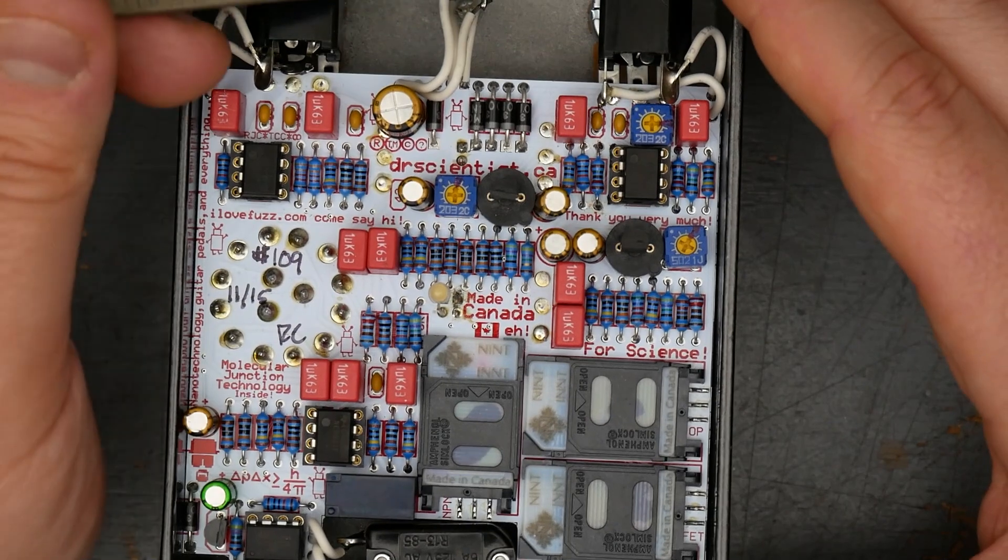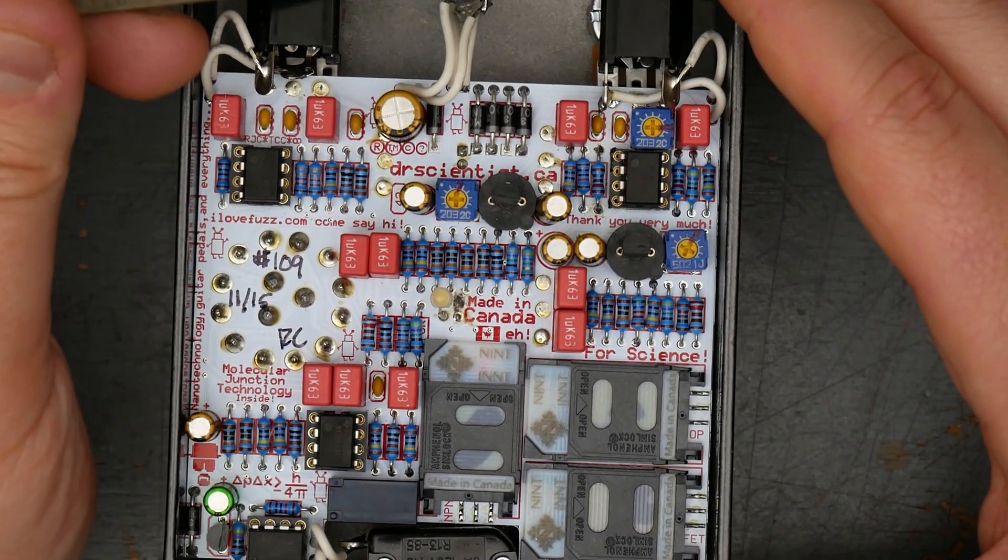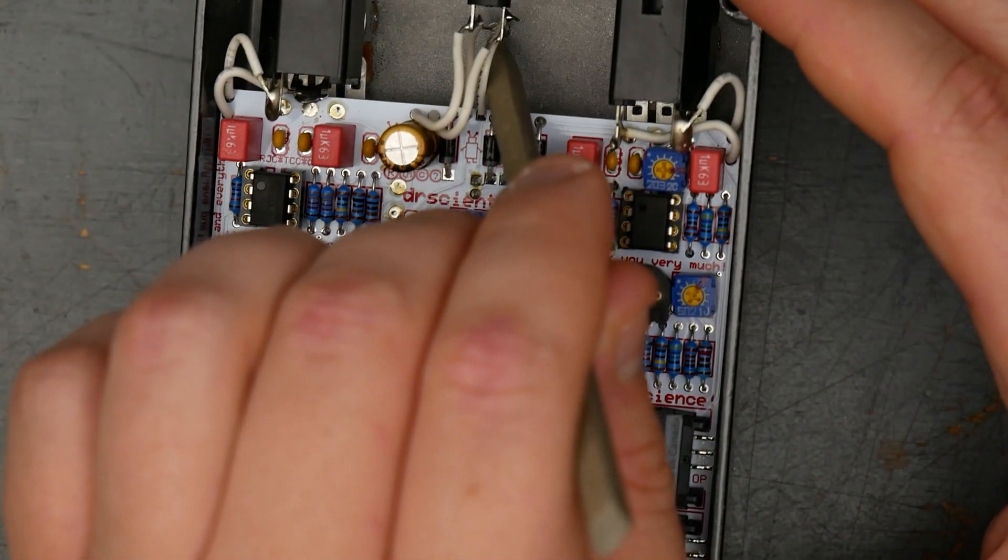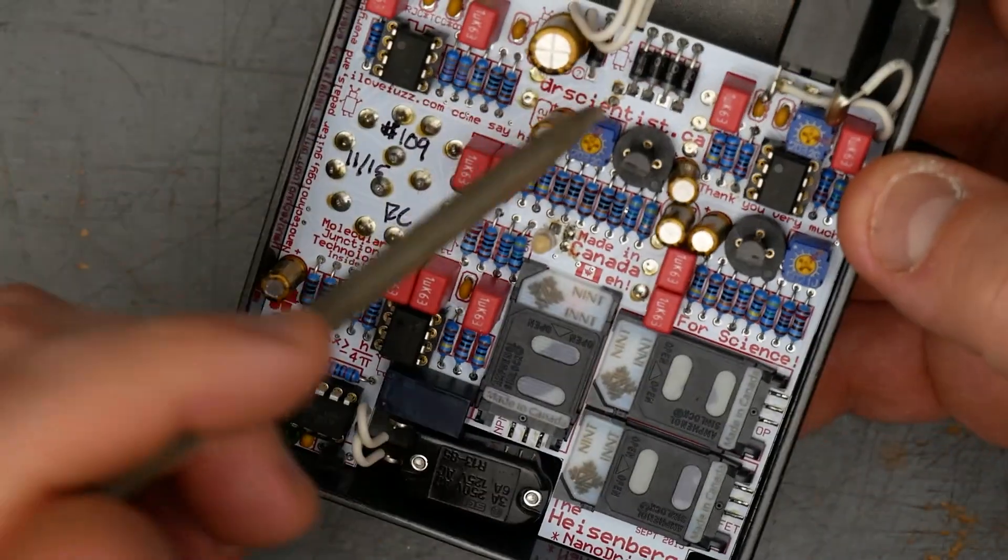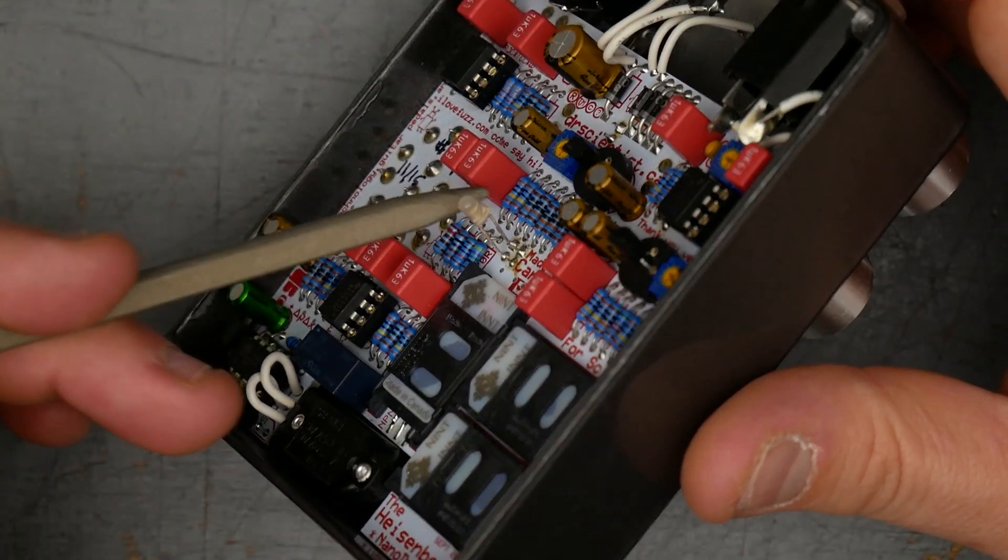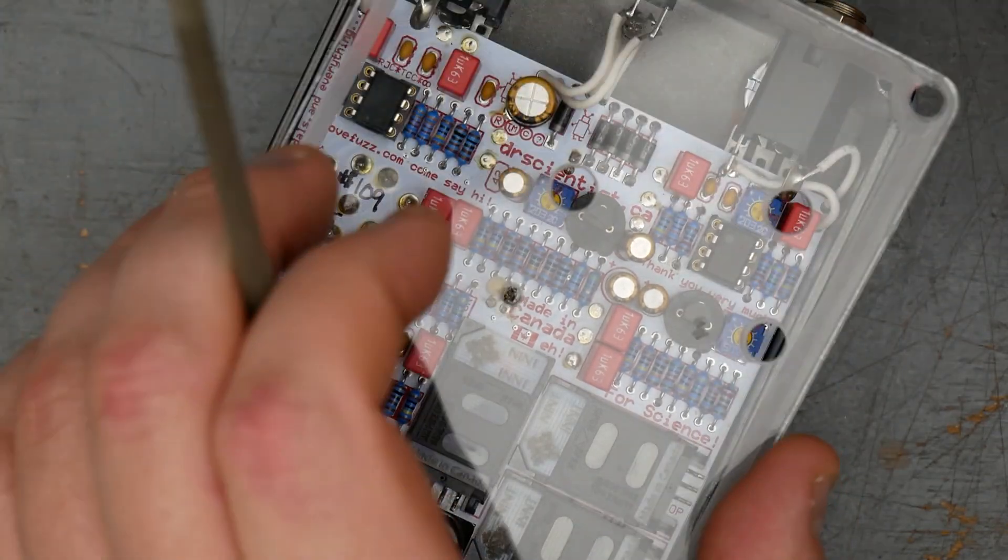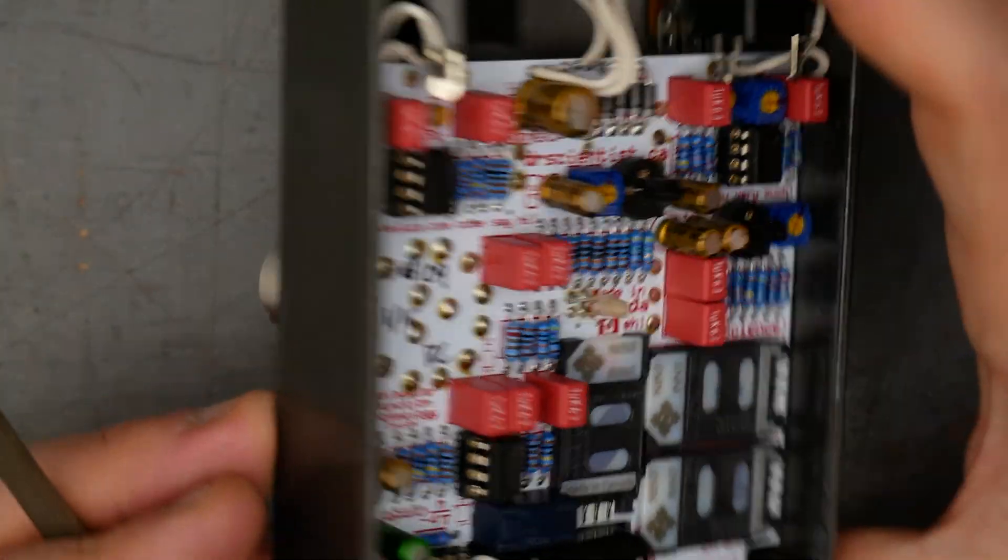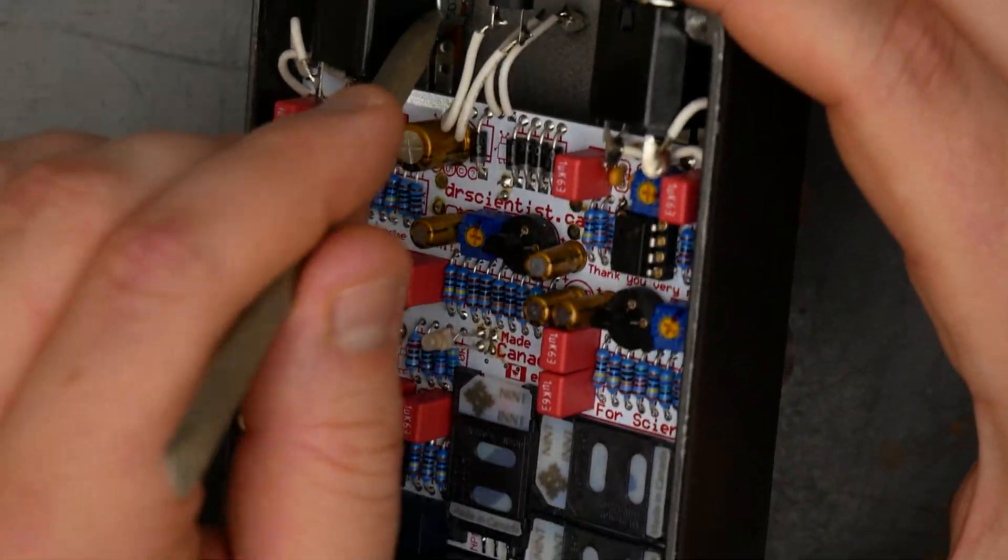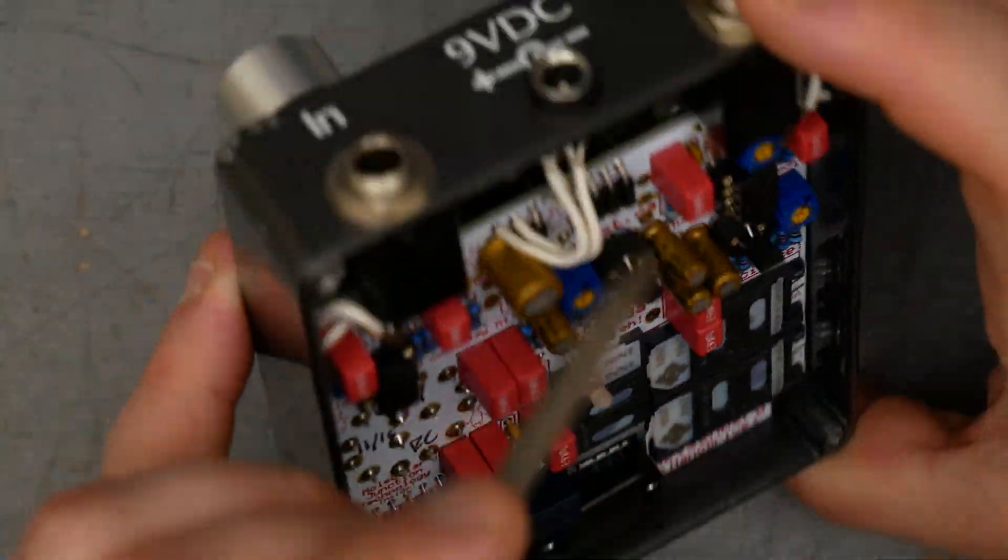Input and output quarter inch jacks are the Switchcraft style enclosed plastic 112BX style input jacks. Again, the non-switching DC jack. These are like the Lumberg style. And then down here is a little LED that's for the op amp. And then the other two are board mounted there and there. There's our LED. This lights up the acrylic bottom here.